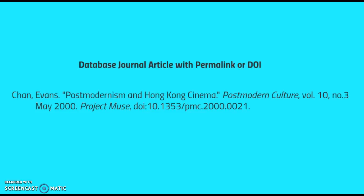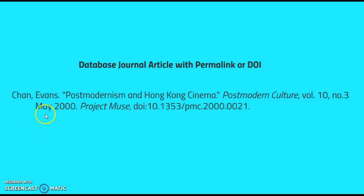Here we have a citation for a journal article accessed from Project Muse. The parts include the author's name, title of the article, journal title, volume number and issue number of the journal, publication date, title of the database, and the stable URL or DOI.